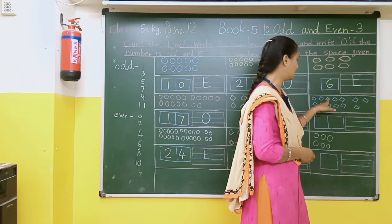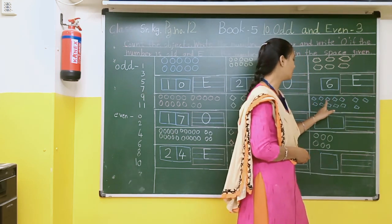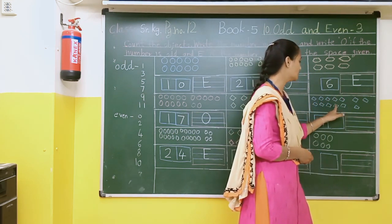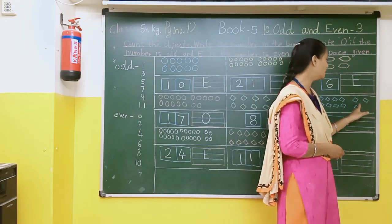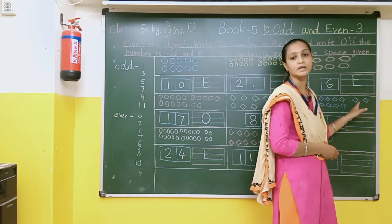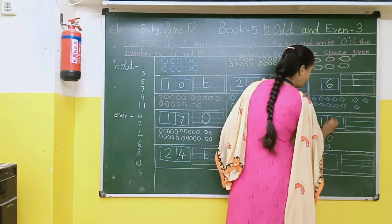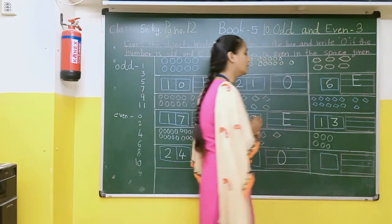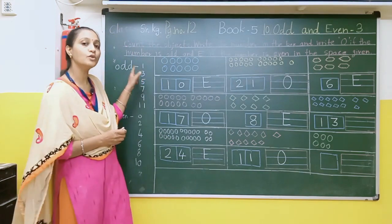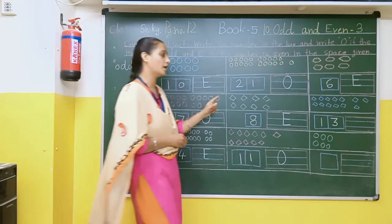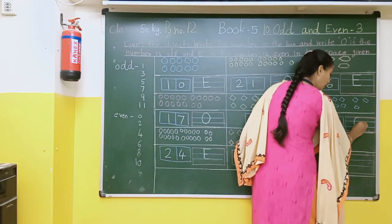Count: 1, 2, 3, 4, 5, 6, 7, 8, 9, 10, 11, 12, 13. Here there are 13. So 3 comes under odd. Here we will write capital O.